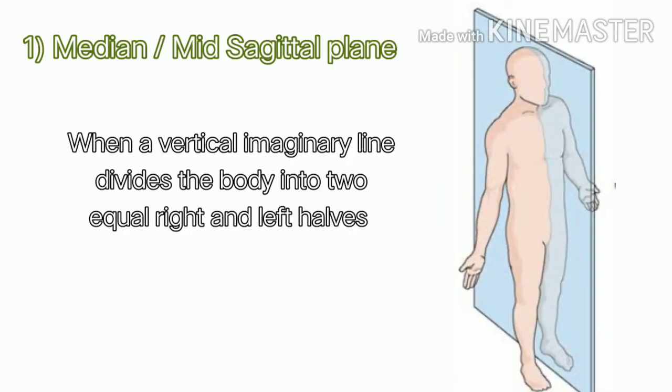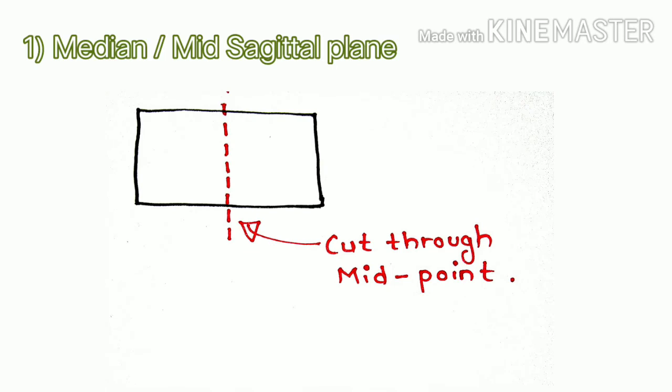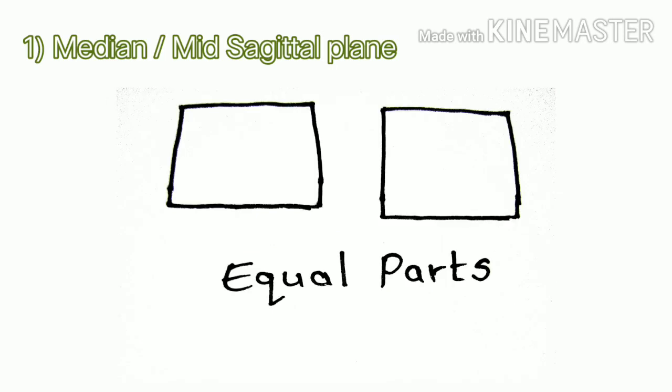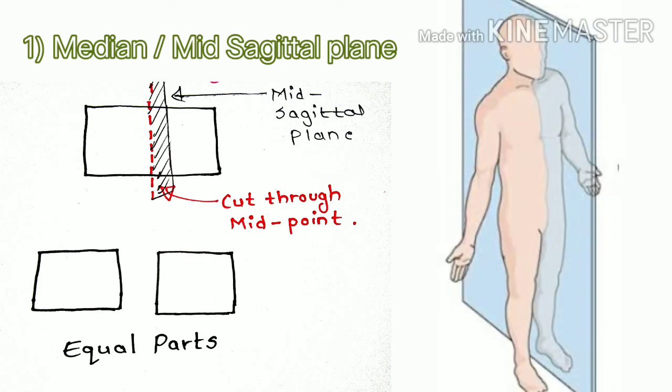Now let's study the planes in which the body is divided. The first comes median or mid-sagittal plane: when a vertical imaginary line divides the body into equal right and left halves. Consider this box as body. If I cut this box into two equal parts, then such plane division is called mid-sagittal or median plane. Similar thing happens with the body as shown in the figure.